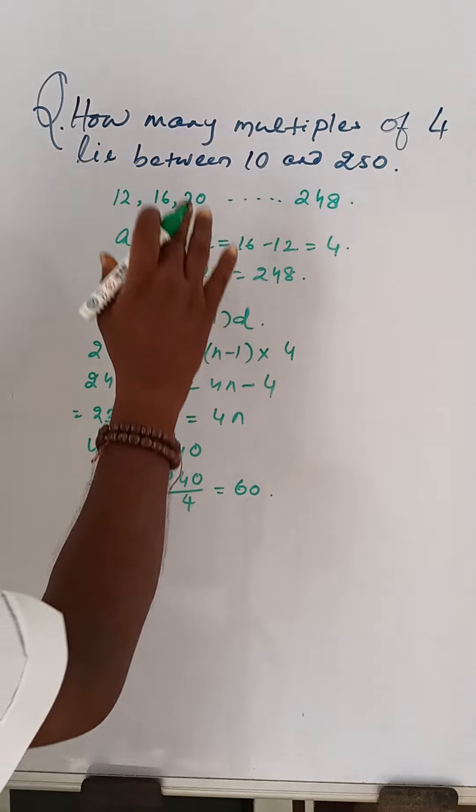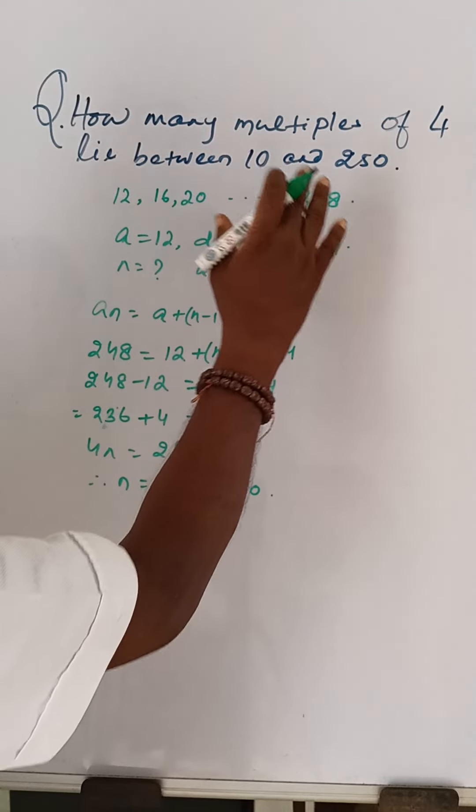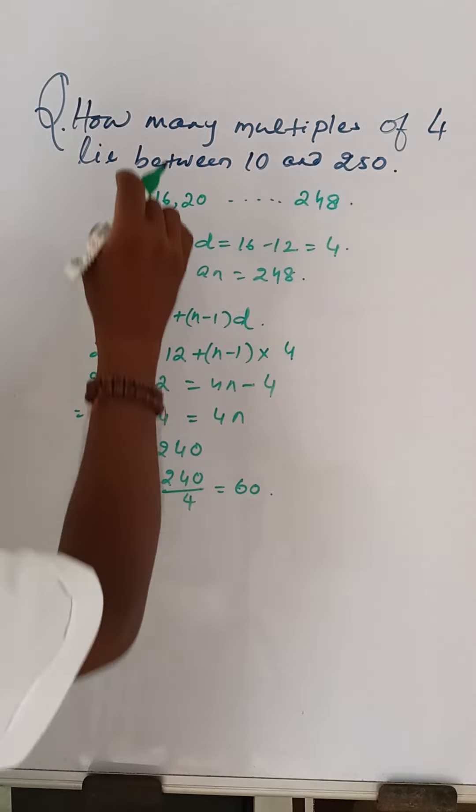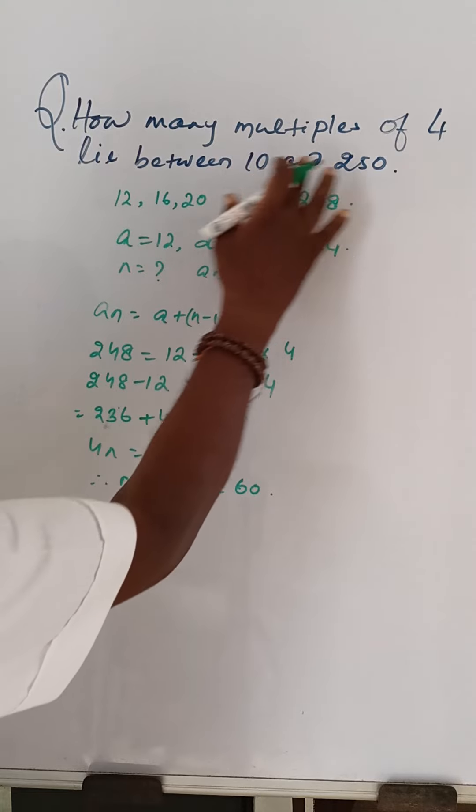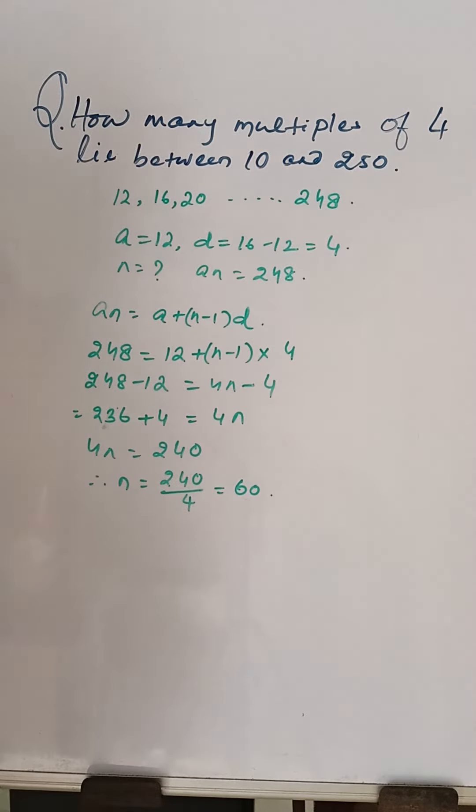There are 60 numbers divisible by 4 lies between 10 and 250, the answer.